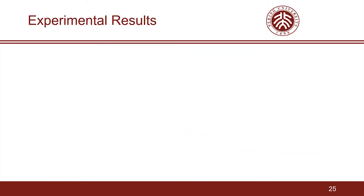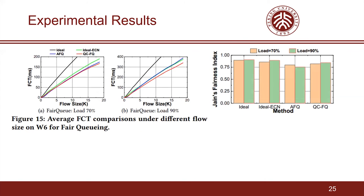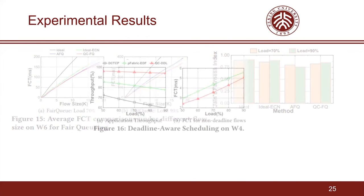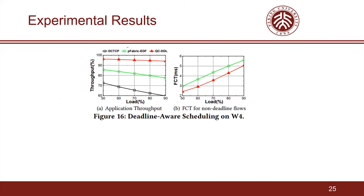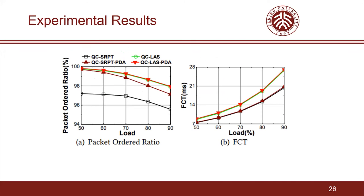We also present experimental results in NS2 simulation. In fair queuing, we find Queue Cluster can always achieve better performance and fairness than AFQ under different traffic loads. In deadline-aware scheduling, we find Queue Cluster can always achieve better FCT throughput under different traffic loads. Finally, we show the impact of our packet disorder avoidance method on packet order ratio and FCT — our method can obviously increase the packet order ratio, whereas FCT remains almost unchanged.